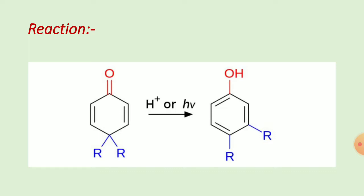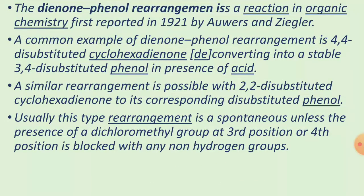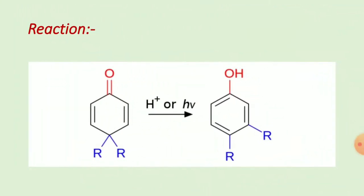The next part is the reaction. This is a 4,4-dimethyl disubstituted cyclohexadienone, where the fourth position has an alkyl group. Under H⁺ conditions (acid conditions), carbocation formation takes place, leading to formation of the phenol product.